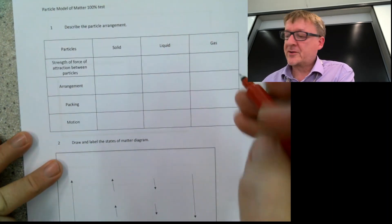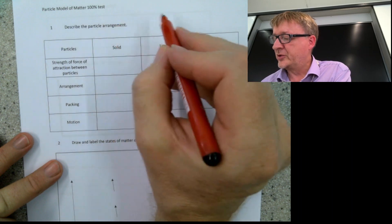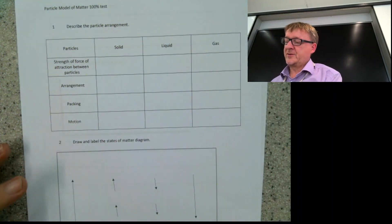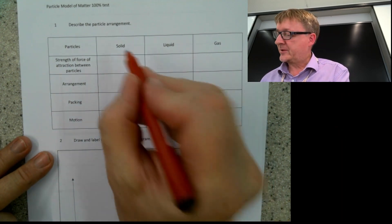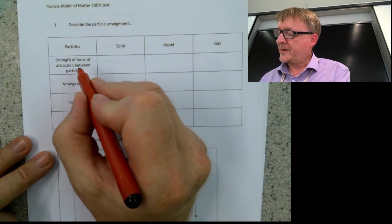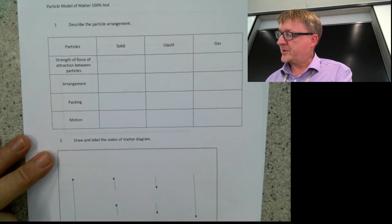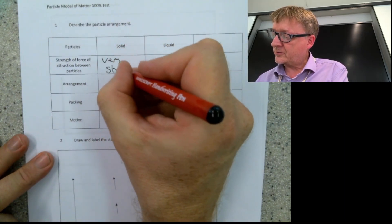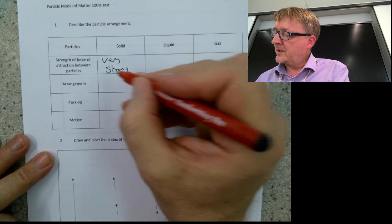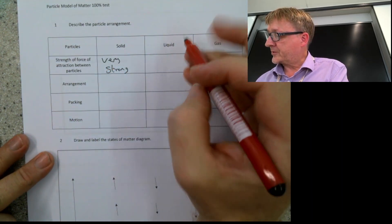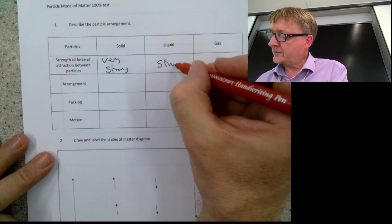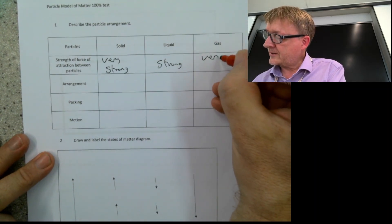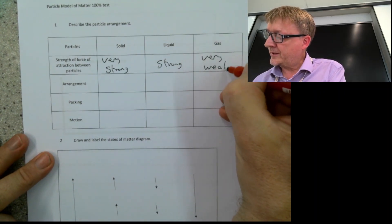This is the particle model 100% fact test. The first thing is we need to describe the particle arrangement for solids, liquids, and gases. The strength of the force of attraction between particles is very strong for solids, strong but not quite as strong for liquids, and very weak for gases.